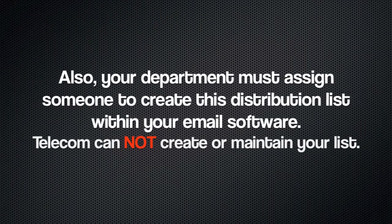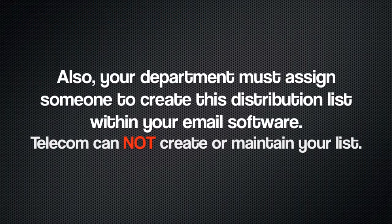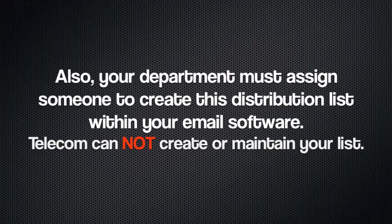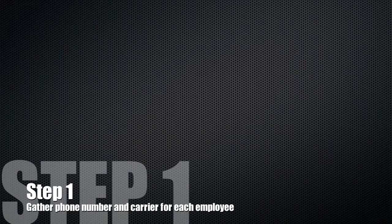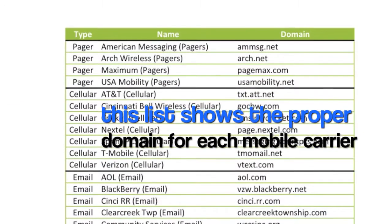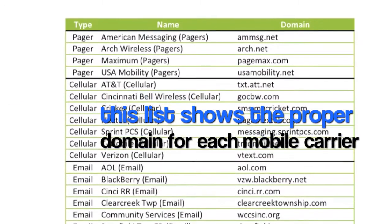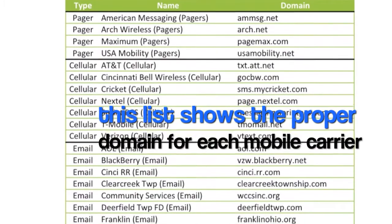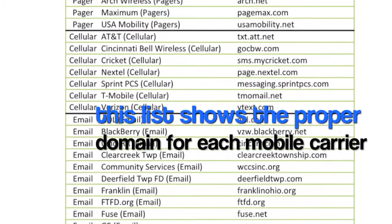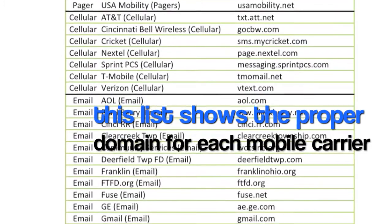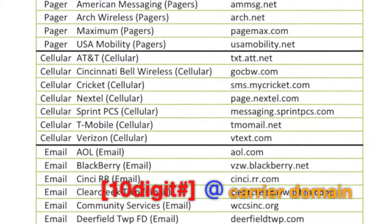Also, Telecom is sharing the method for doing this but it is not a service we offer. Your department needs to assign someone to create this distribution list within your email system. The first step is gathering phone numbers and mobile carriers for each of your people. The phone number is 10 digits including the area code. The carrier will allow you to compare it to a spreadsheet available from Telecom to figure out the carrier's domain.